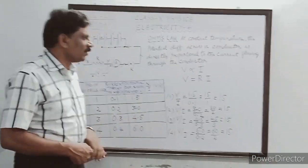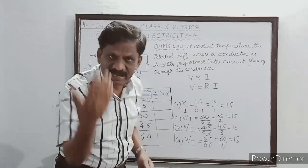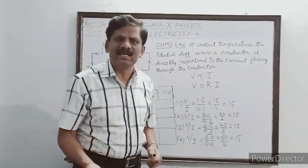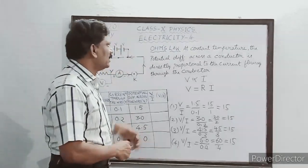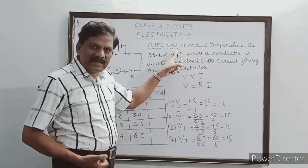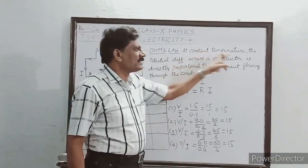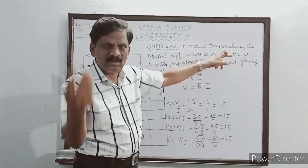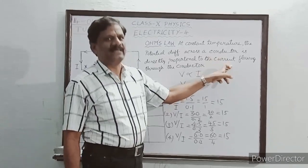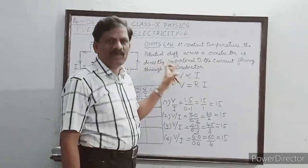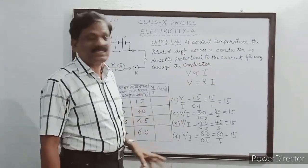I am going to explain why the temperature must be mentioned as constant. But before that, let us read the statement of Ohm's law together: at constant temperature, the potential difference across a conductor is directly proportional to the current flowing through the conductor.